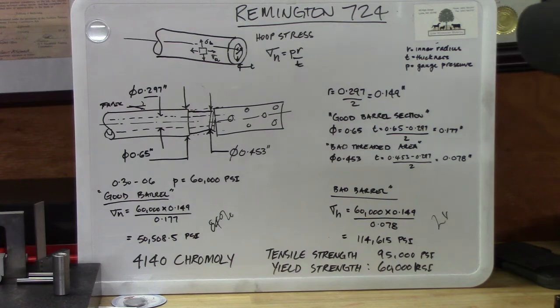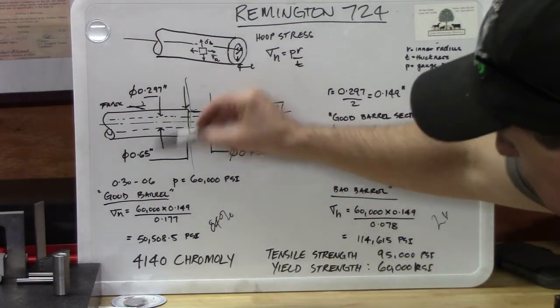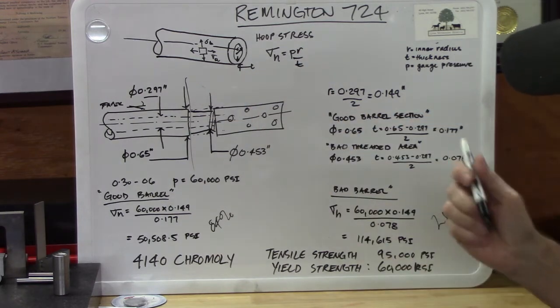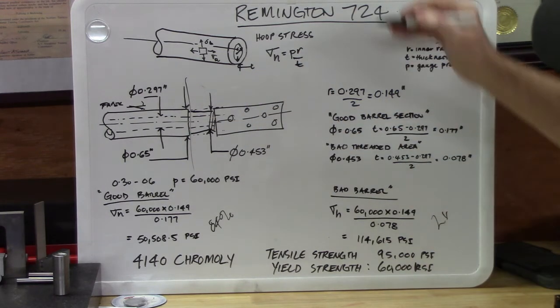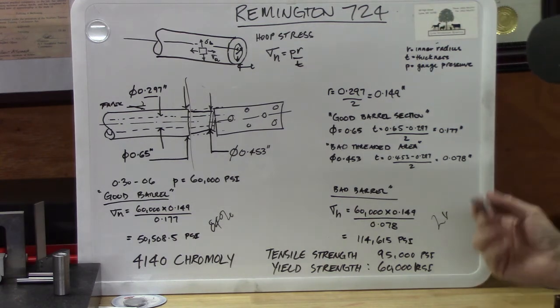The only way to correct this barrel is to chop her off here, and then maybe thread this again, and put a muzzle brake further back. The problem here is, it's off a Remington 724, the barrels for those range from 18 inches plus.